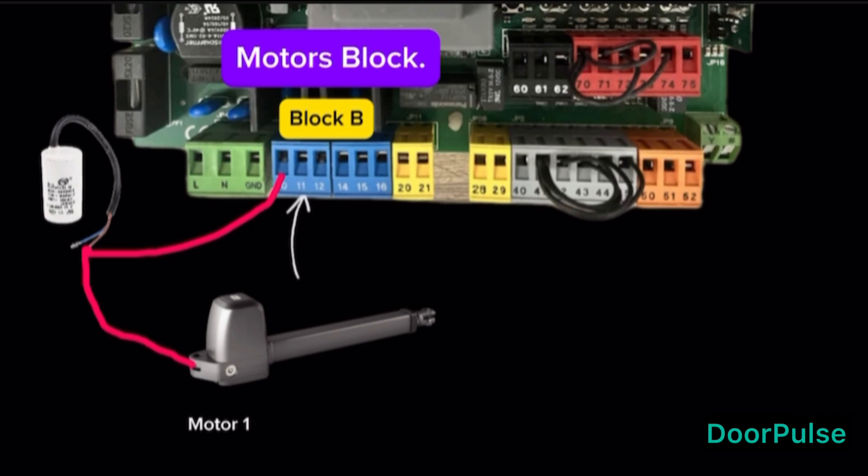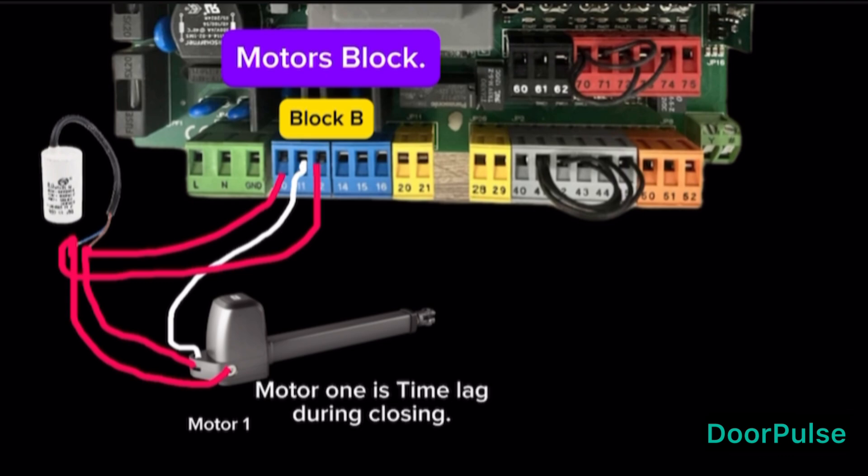Terminal 11, connect Motor 1 common wire only. Terminal 12, connect Motor 1 phase wire with condenser. Motor 1 is time lag during closing. The delay can be adjusted with Trimmer T4.